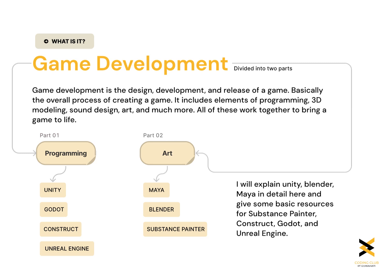So game development is basically the design, development, and release of a game — the overall process. It includes anywhere from programming, 3D modeling, sound design, art, and much more, and all of these come together to bring a game to life. It is divided into two major parts: programming and art.